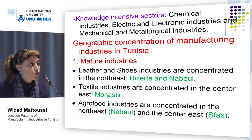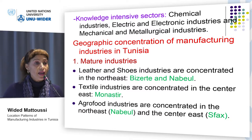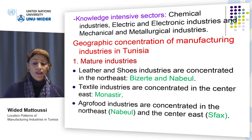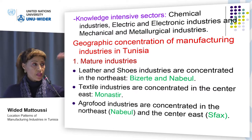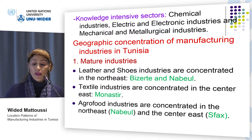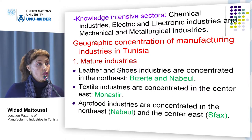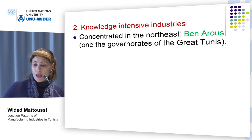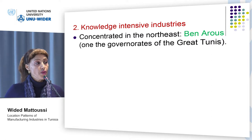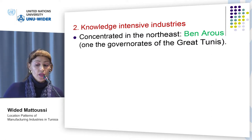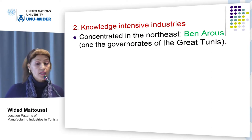Manufacturing industries are indeed agglomerated in Tunisia. Mature industries are agglomerated along the whole coastal line. Leather and shoes industries are concentrated in the northeast region, notably in the governorates of Bizerte and Nabeul. Textile industries are concentrated in the center east in the governorate of Monastir, and agro-food industries are concentrated both in the northeast in the governorate of Nabeul and the center east in the governorate of Sfax, the second central business district in the country. Knowledge-intensive industries are mainly concentrated in the northeast region, precisely in the governorate of Ben Arous, one of the four governorates of the greater Tunis.